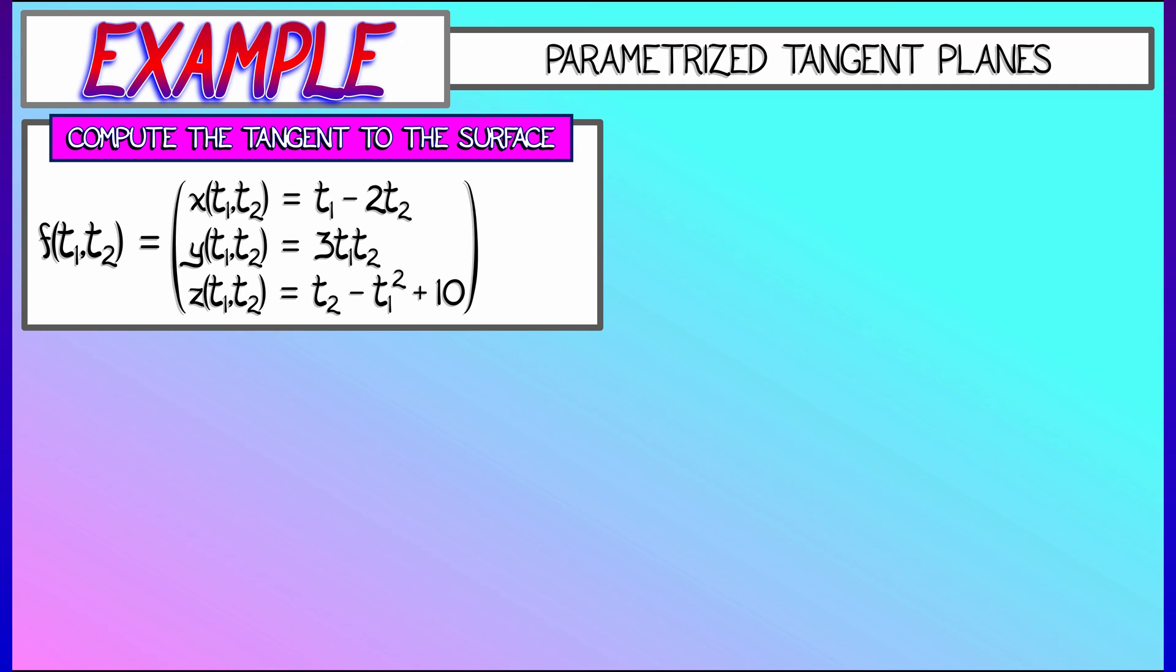Now, I have no idea what that looks like. I'm not going to draw a picture. We're just going to work through it. We have to specify a base point for computing a tangent plane. Let's say it's where t1 is 3 and t2 is equal to 1.